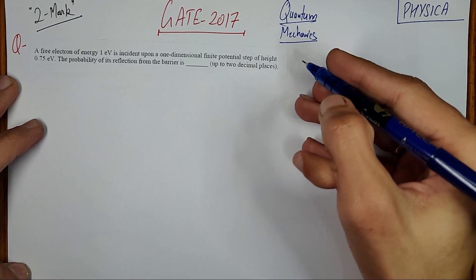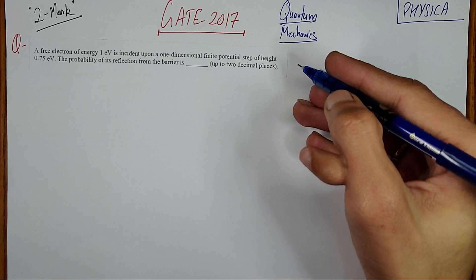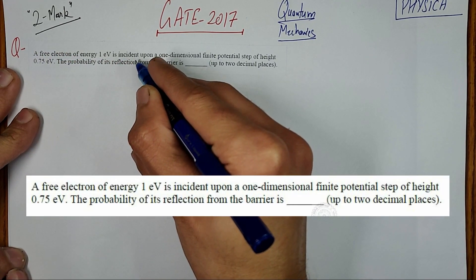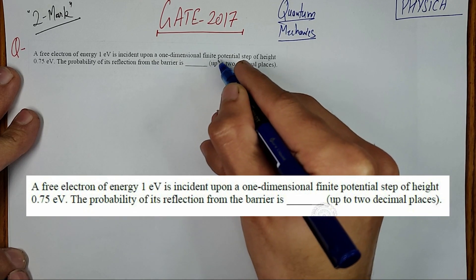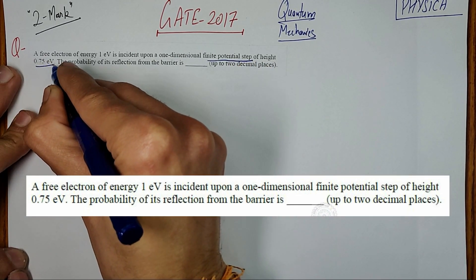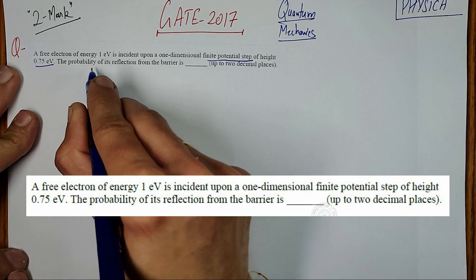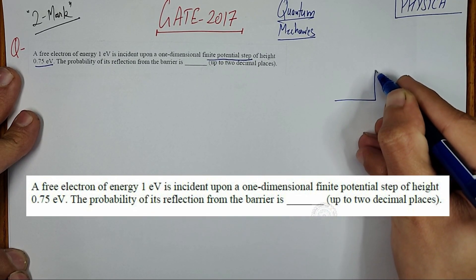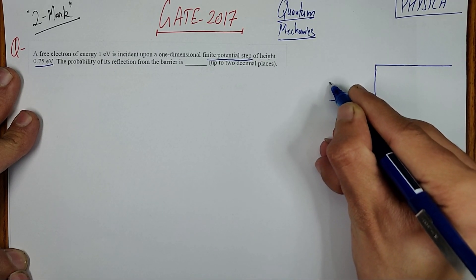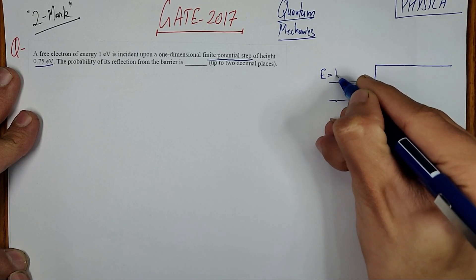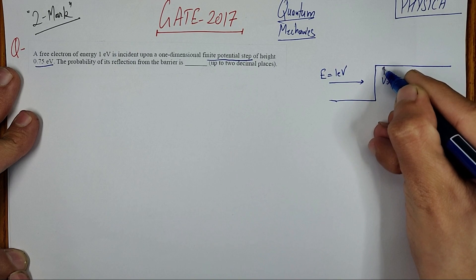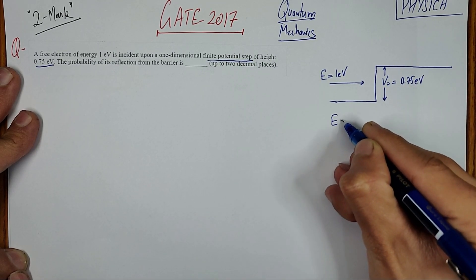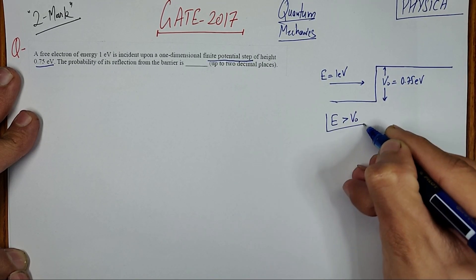Welcome everyone. This question came in GATE 2017 and it is from quantum mechanics, two marks per question. A free particle of energy 1 electron volt is incident upon a one-dimensional finite potential step of height 0.75 electron volt. We need to find the probability of reflection from the barrier. This is the case of step potential where the electron has energy E = 1 eV and potential height V0 = 0.75 eV. Since energy of electron is greater than the step potential height, we proceed accordingly.